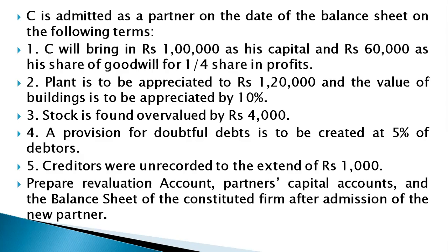C is admitted as a partner on the date of the balance sheet. Adjustment 1: C will bring rupees one lakh as his capital and rupees 60,000 as his share of goodwill for a one-fourth share in profit. The entry for capital is bank account debit to C's capital account. The premium for goodwill of 60,000 will be distributed among the sacrificing partners in their sacrificing ratio.